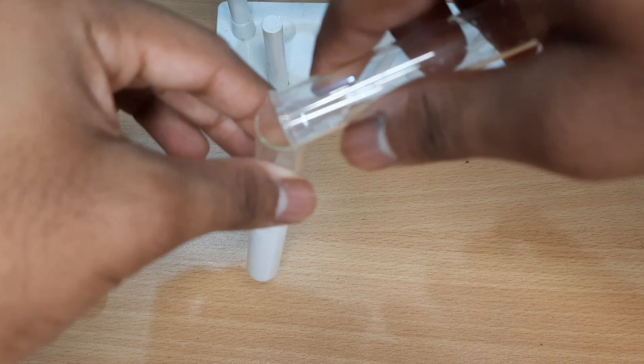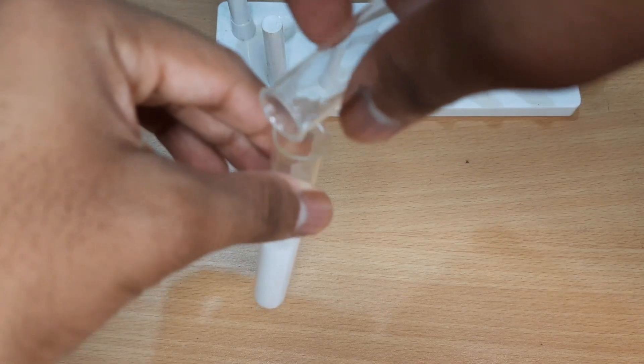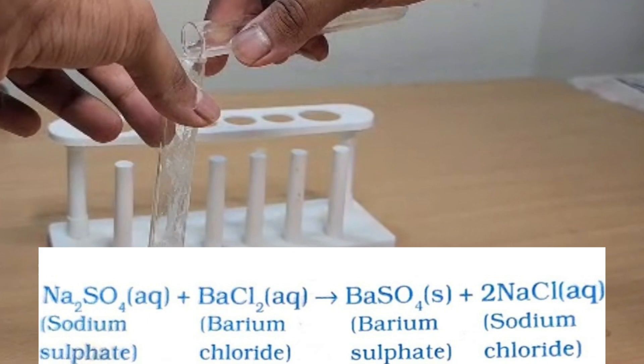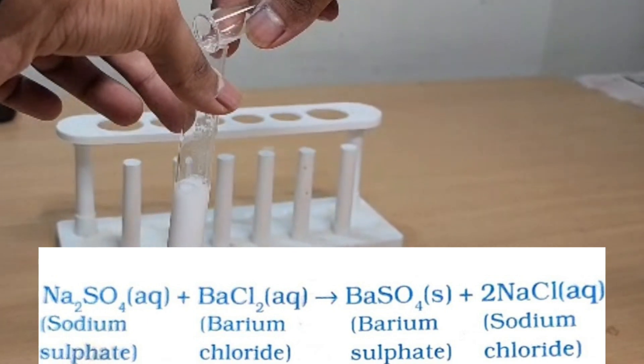A white substance which is insoluble in water is formed. Here barium chloride and sodium sulfate react to form barium sulfate and sodium chloride.